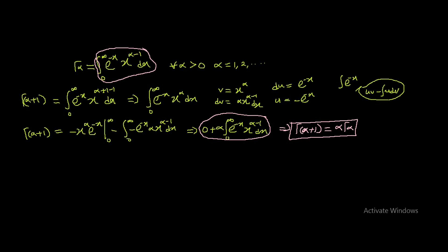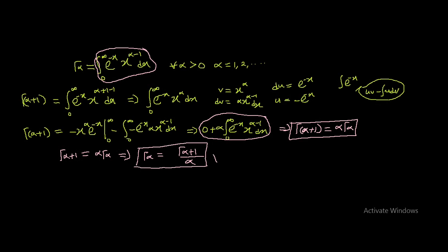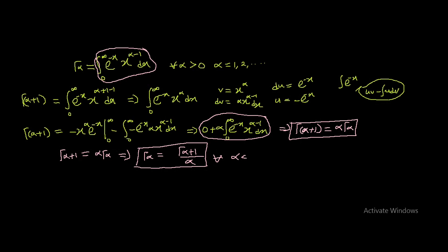From here you can also generate another formula: Gamma(alpha) = Gamma(alpha + 1) / alpha. This formula is used for all alpha less than zero — if you have a gamma value with alpha less than zero, you can use this formula to compute it.